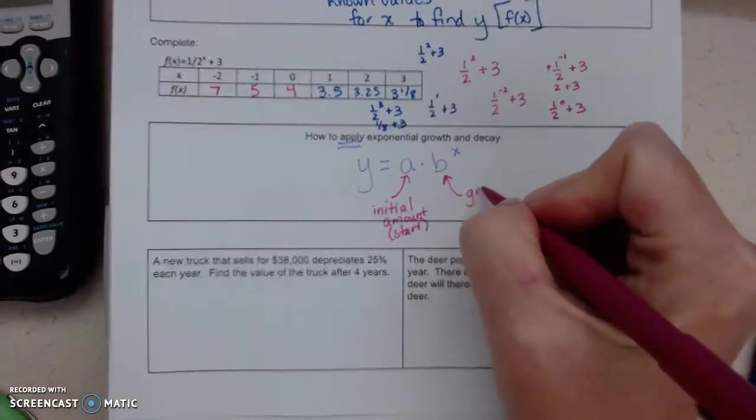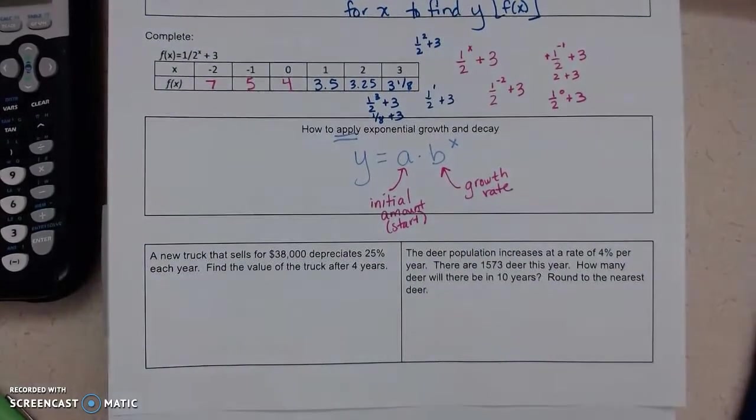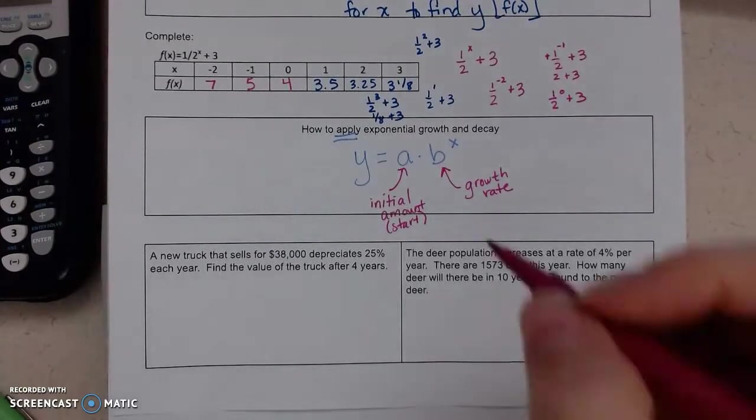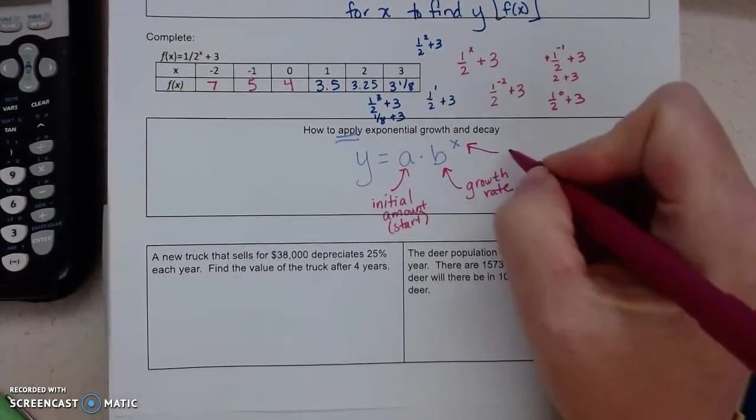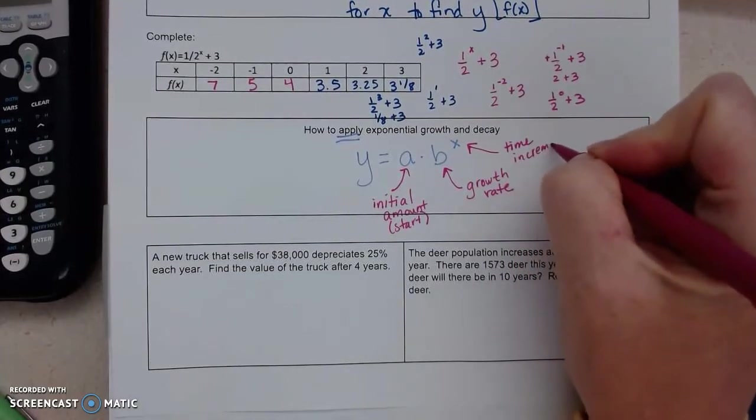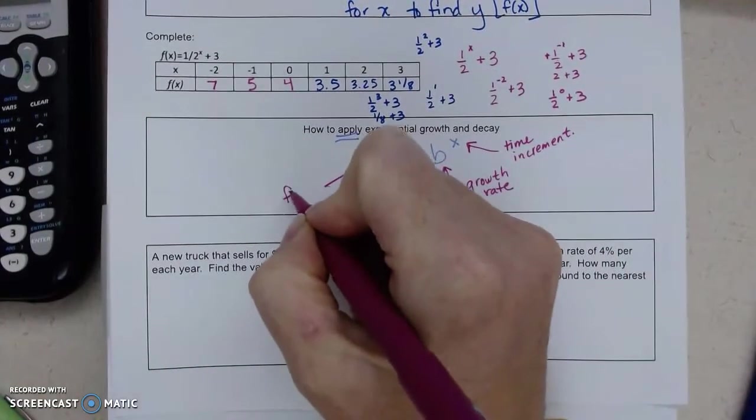b is our growth rate. So even if something is decaying, we are going to figure out how much is actually growing. And it might be growing less than 100%, but b needs to be written in terms of the growth. t is going to be my time increment: days, years, months, it really depends on the problem. And then y is going to be the final amount, and that's usually what you are looking for.